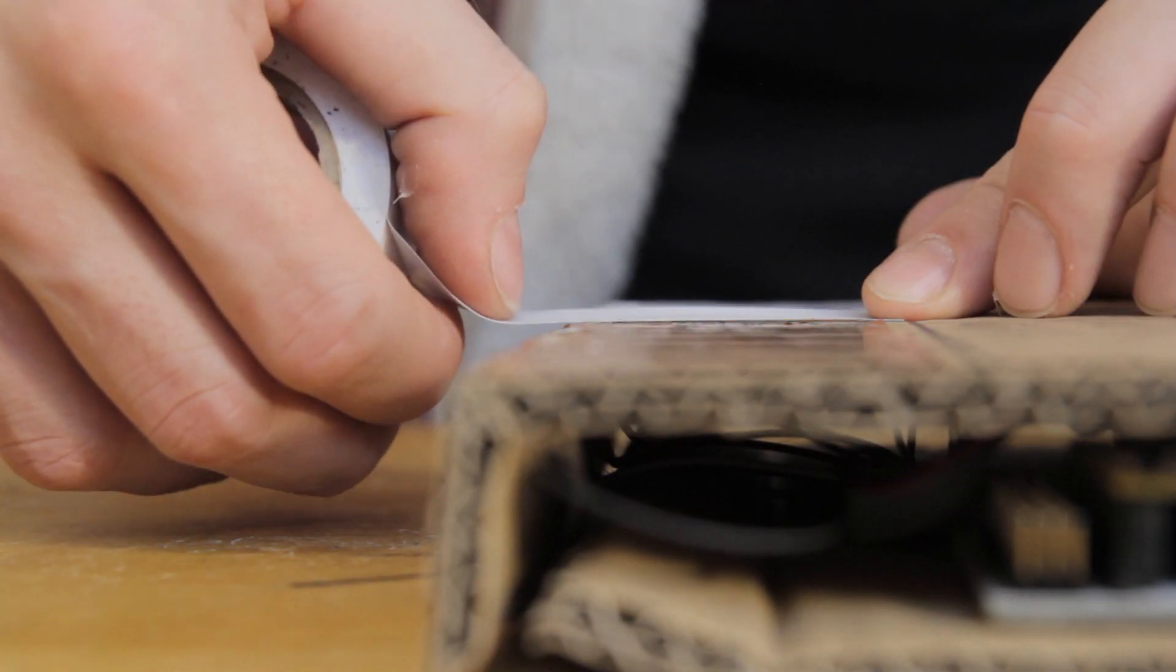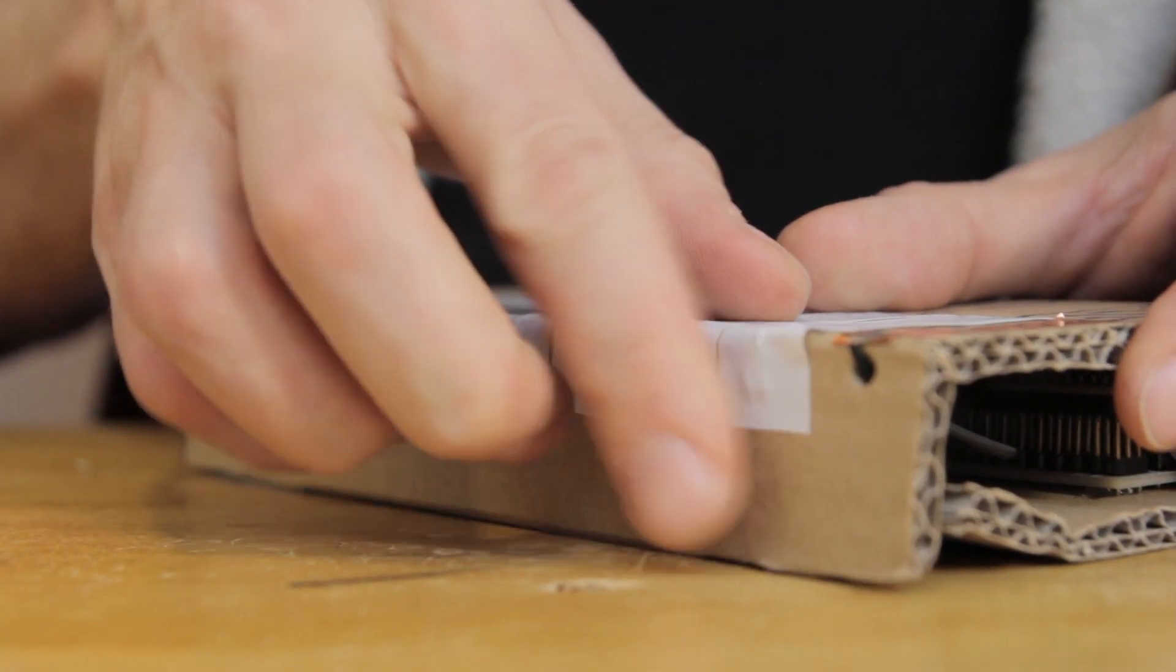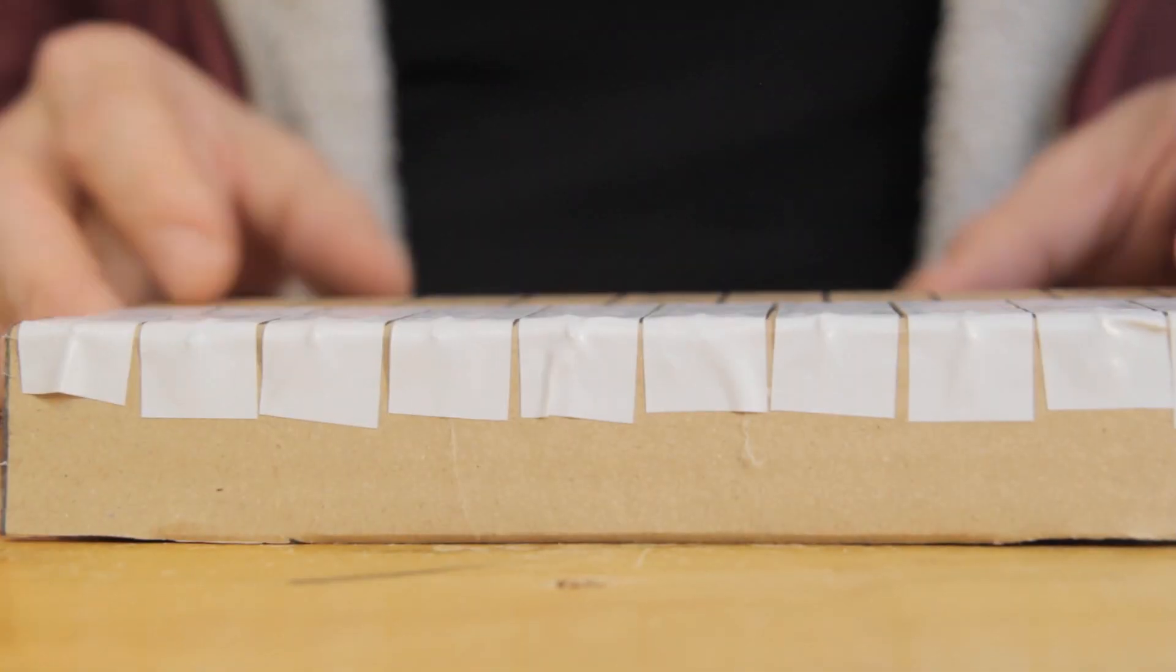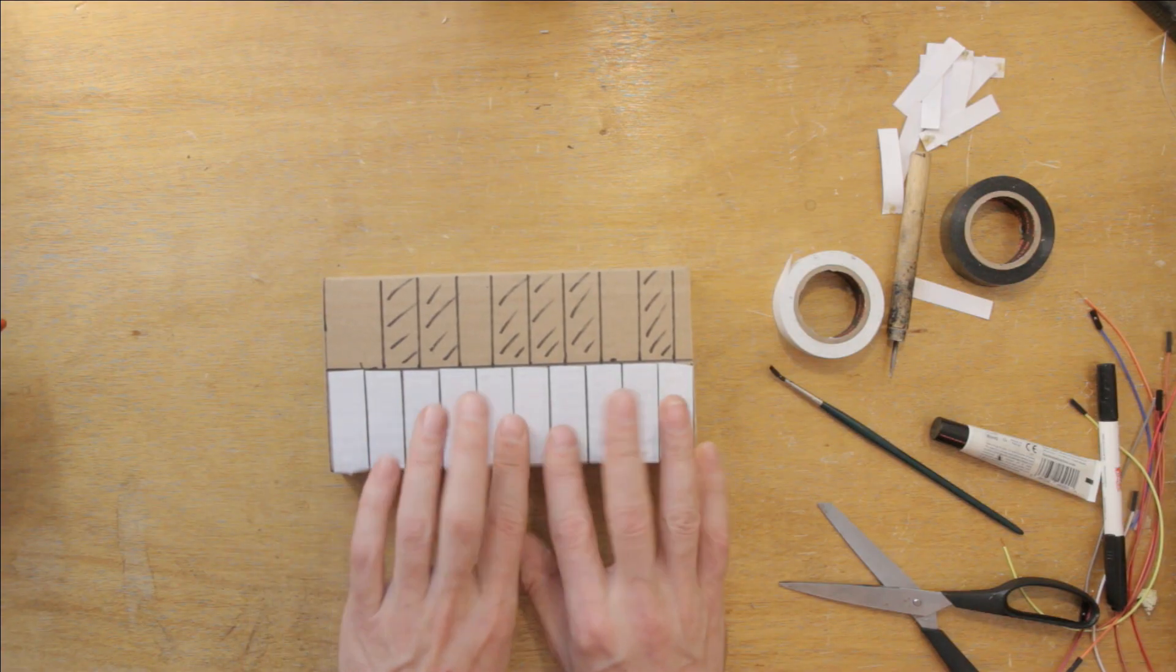These keys are capacitive sensors, so the electrical tape is what's called the dielectric layer. All capacitive sensors need one of these to isolate direct electrical conduction with your finger while allowing the electrical field to be measured, which is what a capacitive sensor does. There, still looking good. Well, good enough. Now for the black keys.